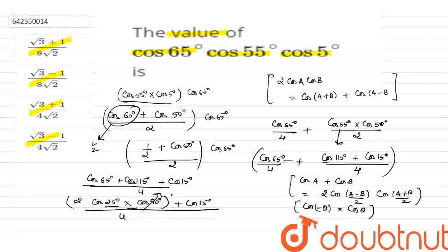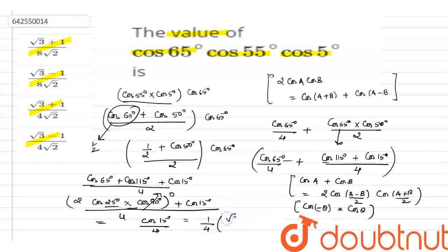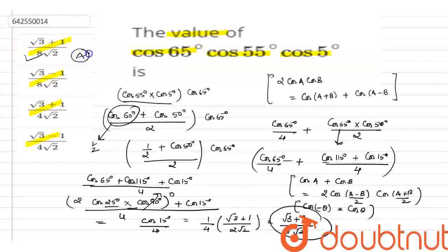The remaining term is cos(15°)/4. Since cos(15°) = (√3+1)/(2√2), our final answer is (√3+1)/(8√2). So option A is correct.